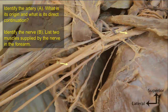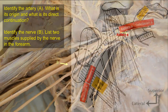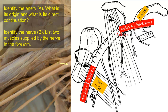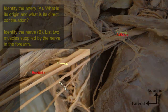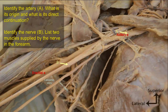Identify artery A — what is its origin and what is its direct continuation? Artery A is the axillary artery. It begins at the outer border of the first rib as the continuation of the subclavian artery, and it ends by becoming the brachial artery at the lower border of teres major muscle, where the ribbon-like tendon of latissimus dorsi wraps around it.